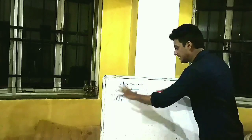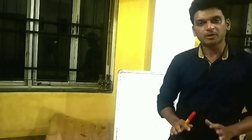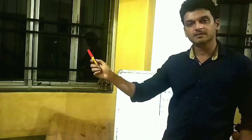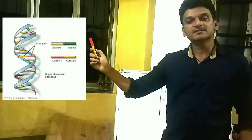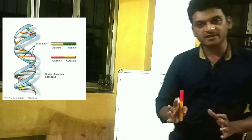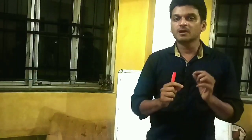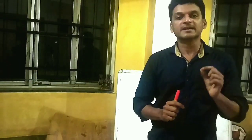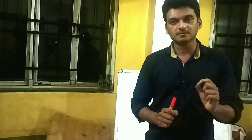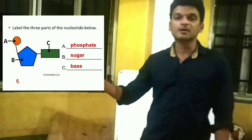That protein molecule is called histone. This DNA molecule is coiled by the histone molecule. This is how you learn about DNA. As you can see in the image, in DNA there are two strands, and each strand is made up of a small unit called a nucleotide.